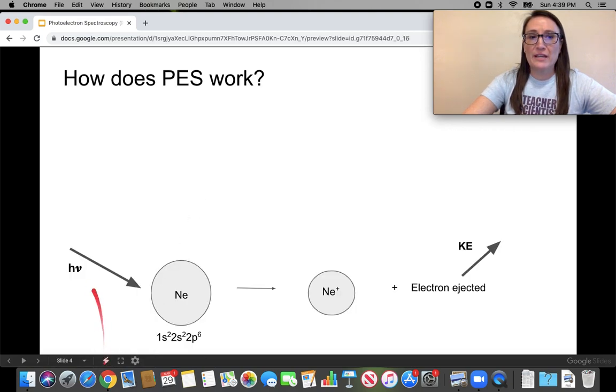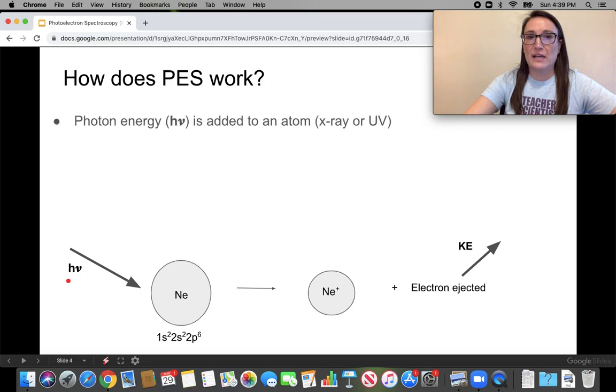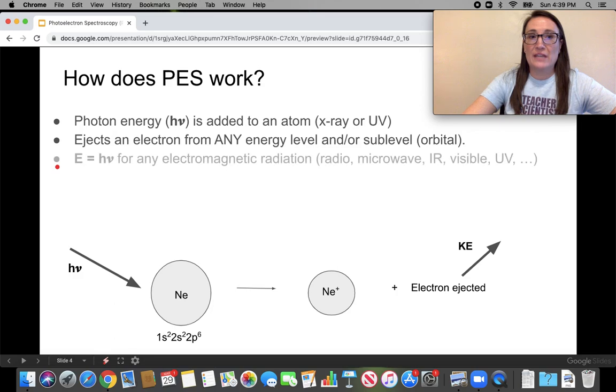First, you send in photon energy, which is Planck's constant times nu, which is frequency. We have to use x-ray and UV energy because of the high energy we need to be able to remove any electron in an atom, not just the valence. Next, a review would be that E equals h times nu is any type of electromagnetic radiation from radio waves out to gamma.